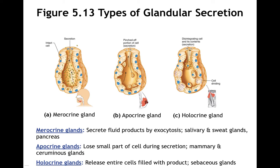Merocrine glands secrete fluid by exocytosis — salivary glands, sweat glands, and the pancreas are merocrine glands. Apocrine glands lose a small part of the cell during secretion — mammary glands and ceruminous glands are examples. Holocrine glands release the entire cell filled with its product — sebaceous glands are an example of holocrine glands.